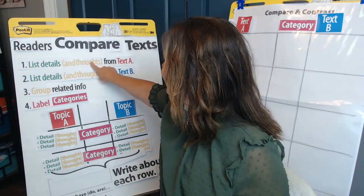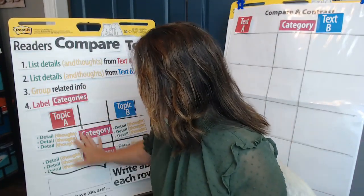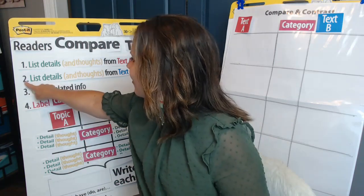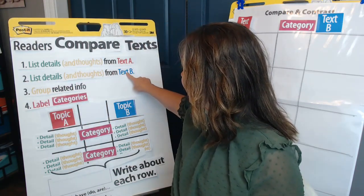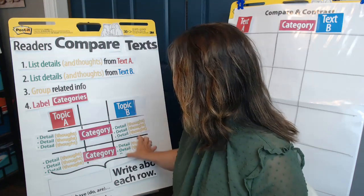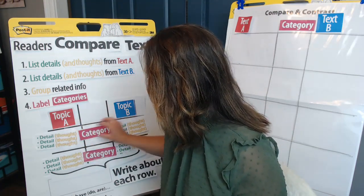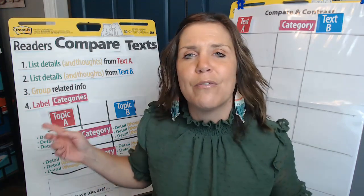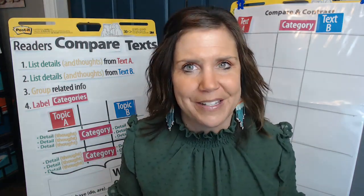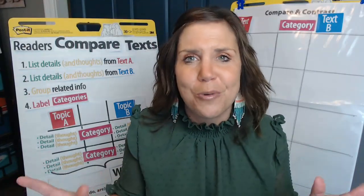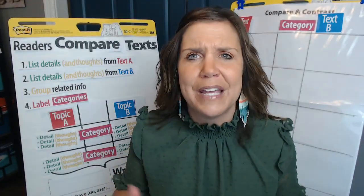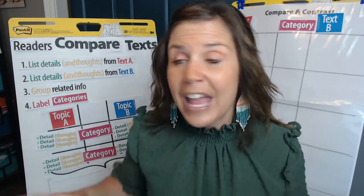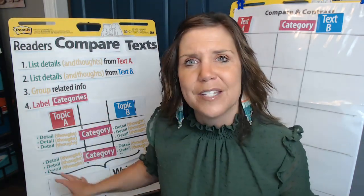Our first step is to list all the details and thoughts from Text A. We use a T-chart and we put all the details for one text on one side — Text A or Topic A. Then our second step is to list all the details from Text B on the other side of our T-chart. We start to group related information and put things together, and we have these categories down the middle. For fiction texts, the categories were always story elements — character, setting, problem, solution, and theme or the lesson you learn — and those categories down the middle would never change.